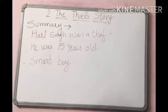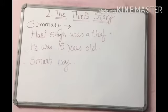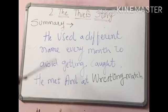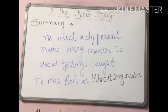Moving ahead with the summary, we have two characters in the story. The first is Hari Singh, who was a thief. He was 15 years old, quite intelligent for his age, and a very smart boy. Hari used a different name every month to avoid getting caught by the police, as he was a thief and had to change his name every time.